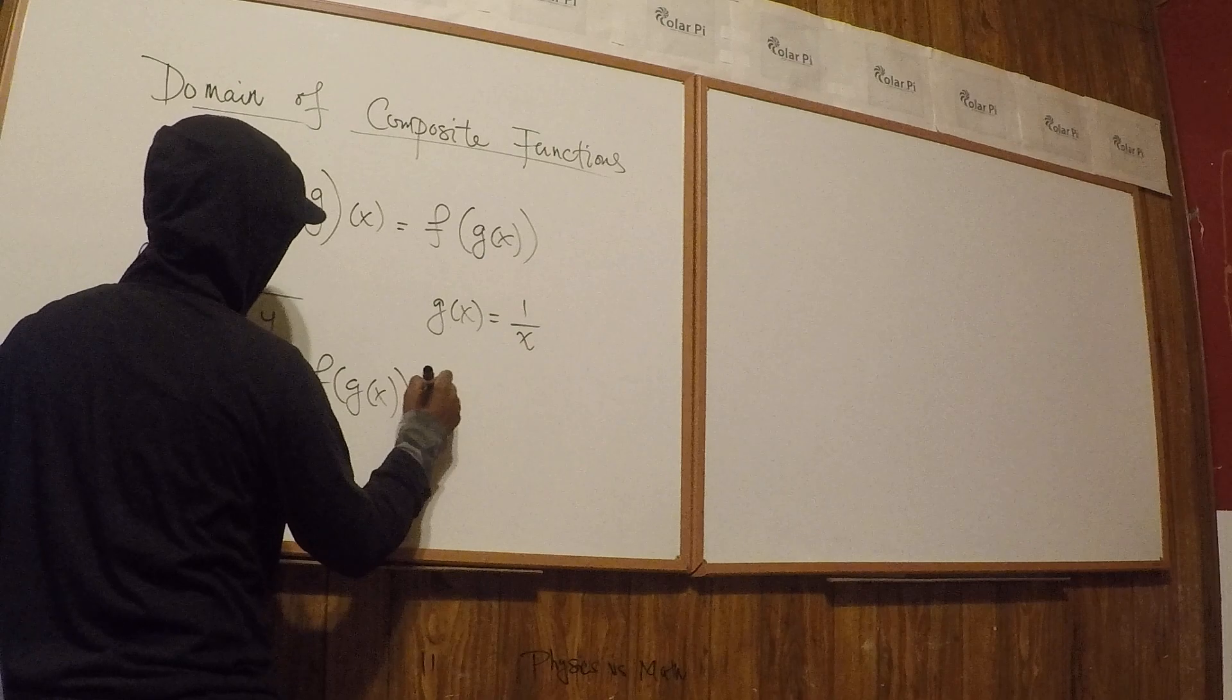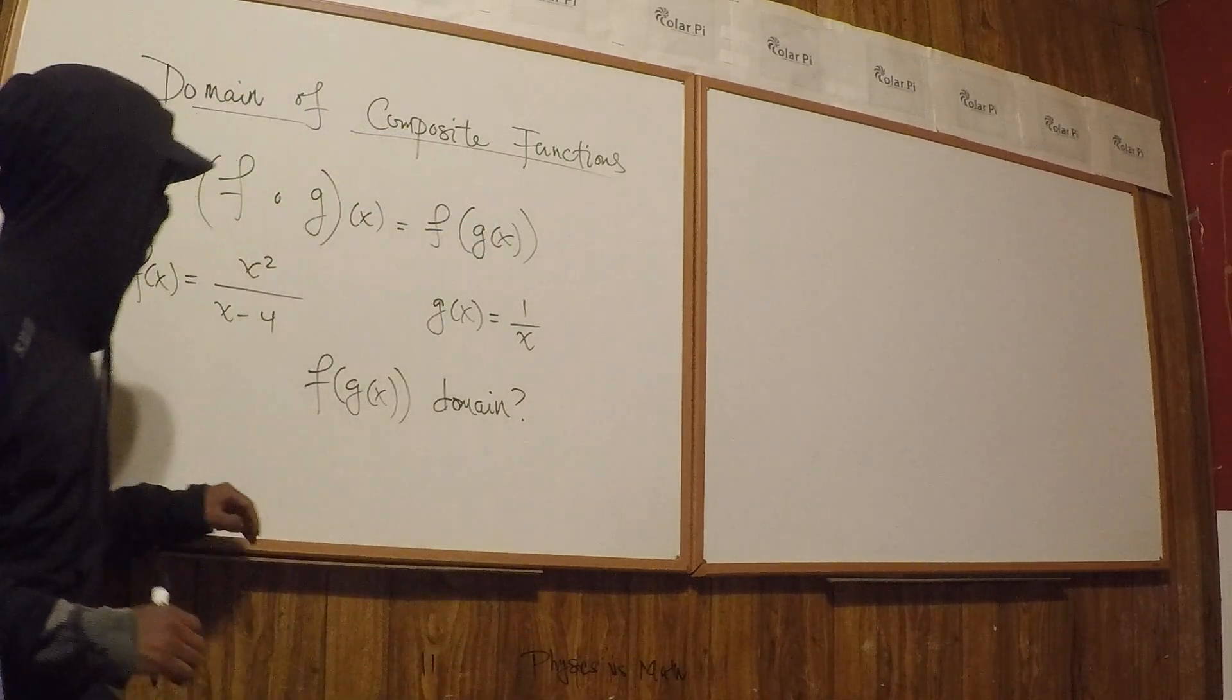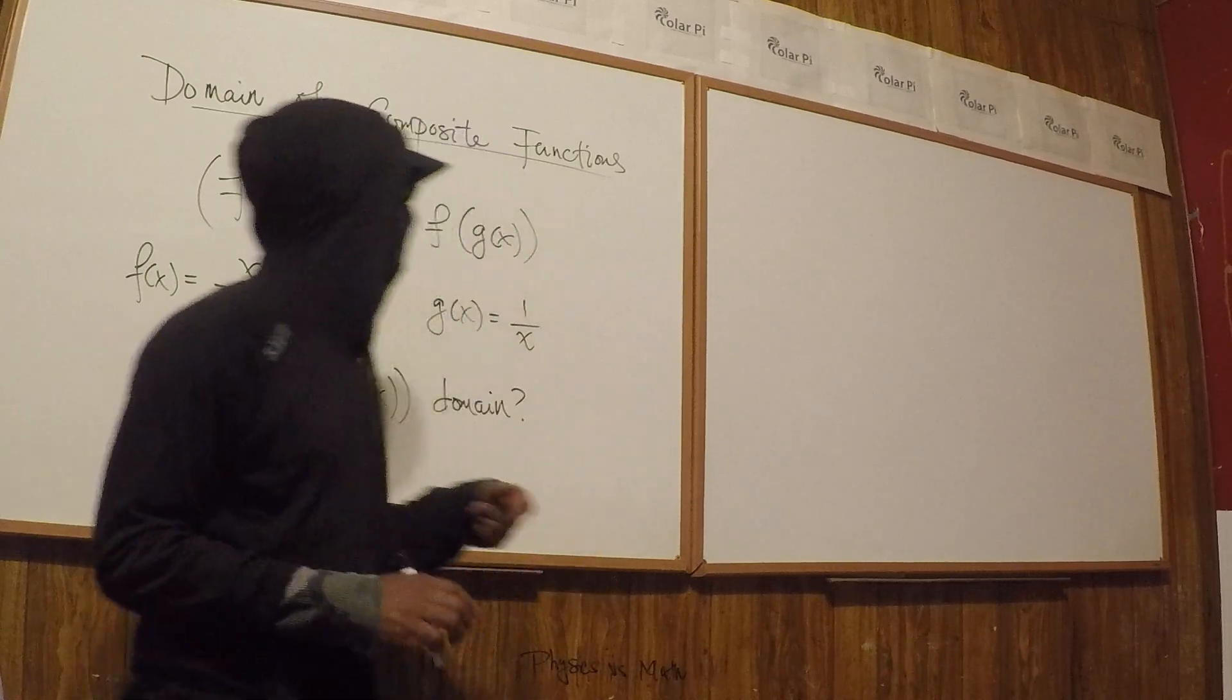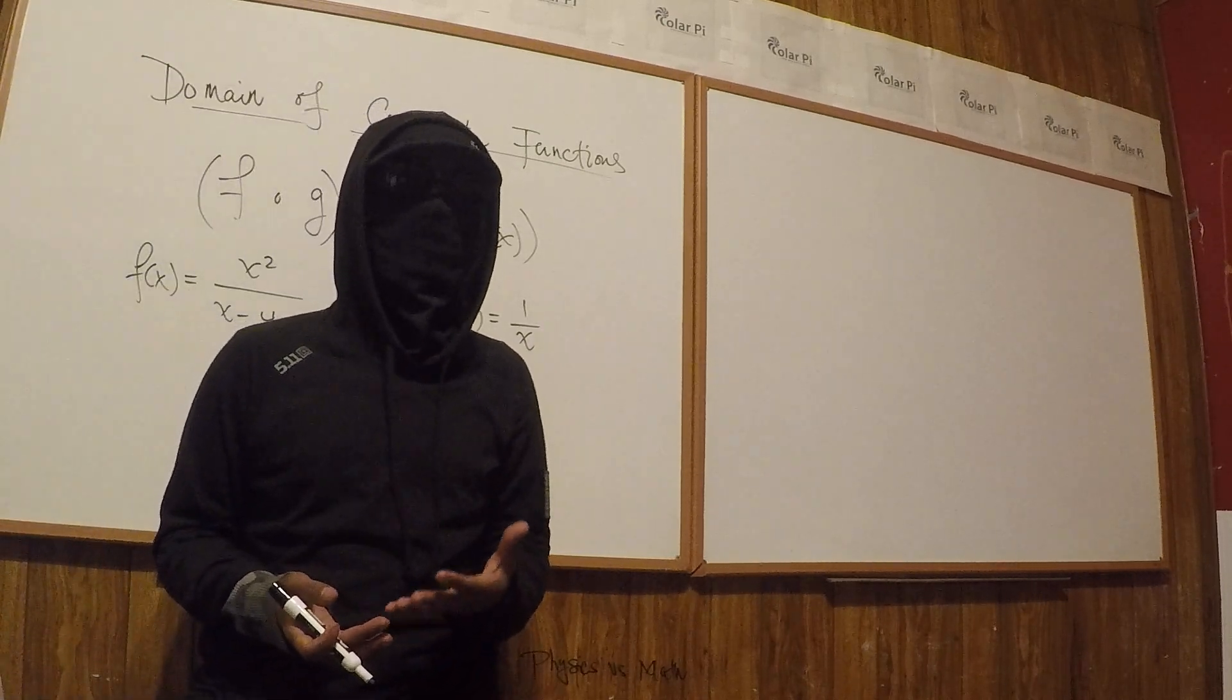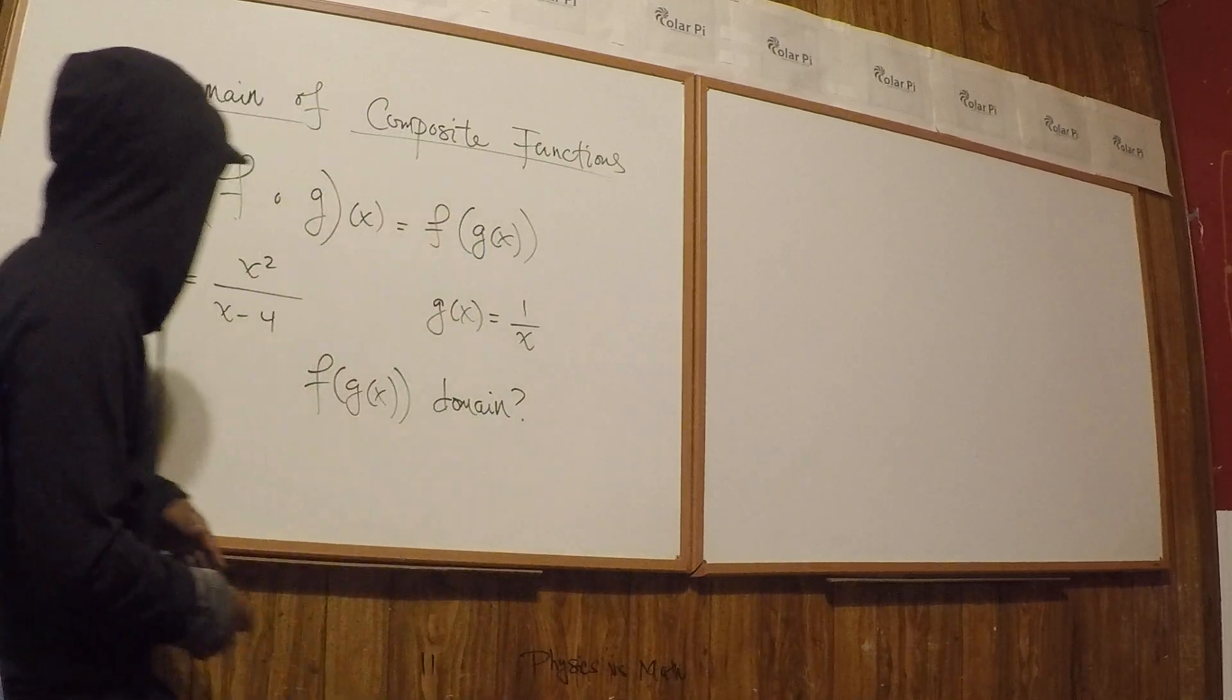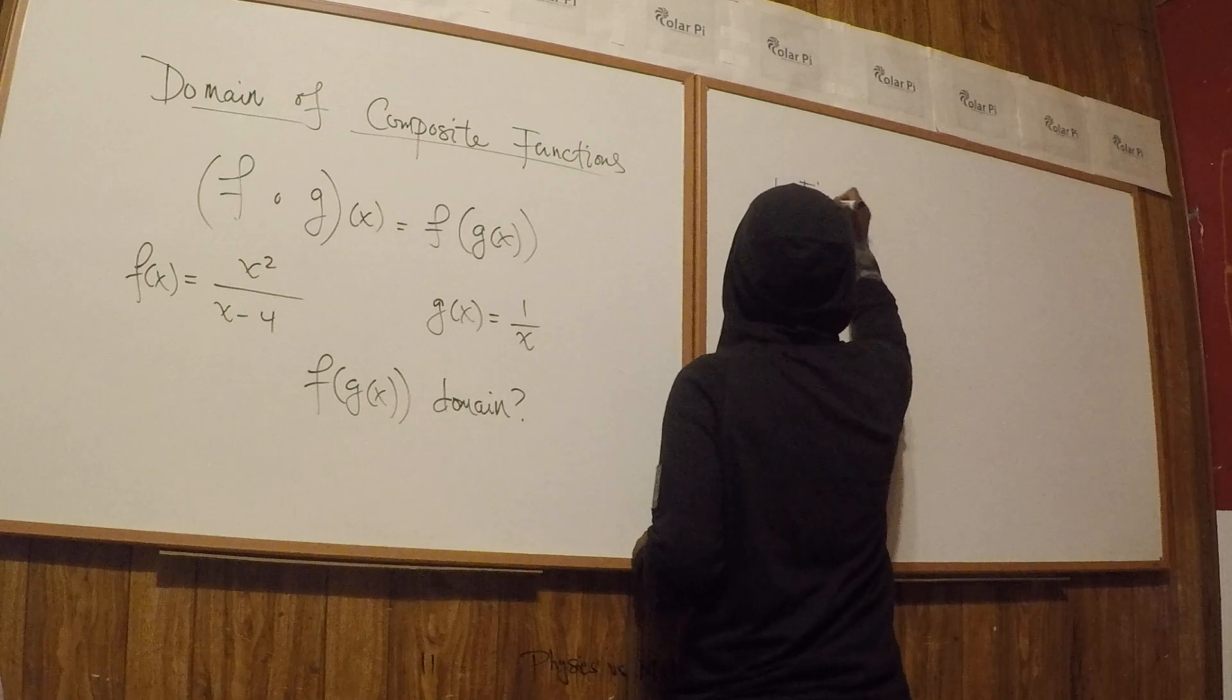What we want to know is the domain of f of g of x, and so this is the task at hand. This is how you go about finding the domain of composite functions. First, although I've said this in the past, composition is not commutative. So f of g of x is not equal to g of f of x. There are instances when they're equal, for example if f and g are inverses, but as a general rule composition is not commutative.